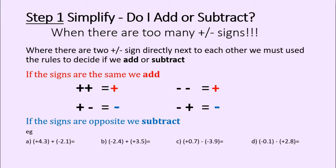Here are some examples. I've got a positive and a negative — those signs are opposite, so I'm going to subtract. Here I've got a positive and a positive — the signs are the same, so I'm going to add. Here I've got a negative and a negative — the signs are the same, so I'm going to add. And here I've got a negative and a positive — the signs are opposite, so I'm going to subtract.